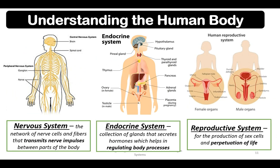Now, the nervous system is the network of nerve cells and fibers that transmit nerve impulses between parts of the body. The components of the human nervous system are the brain, spinal cord, and the nerves surrounding our body.